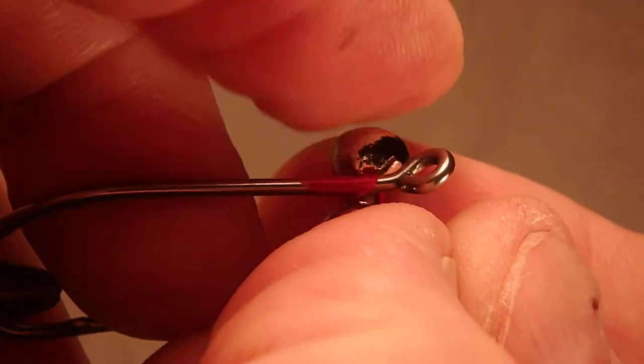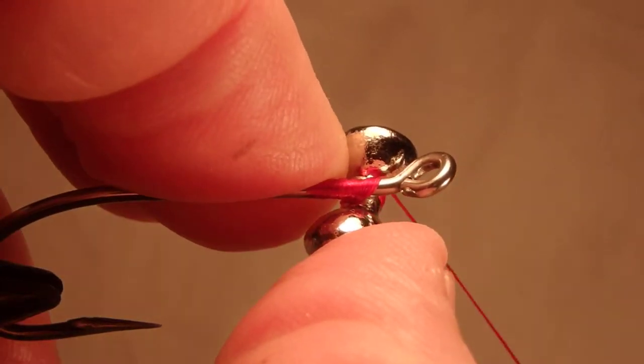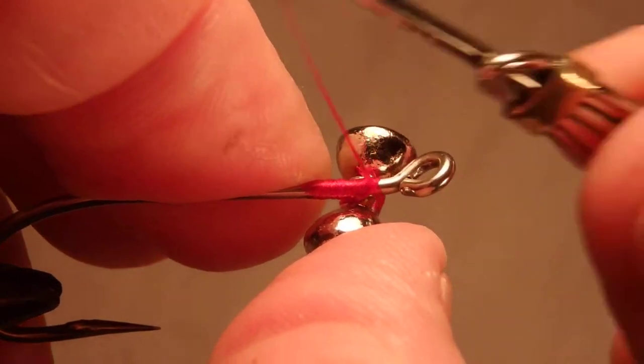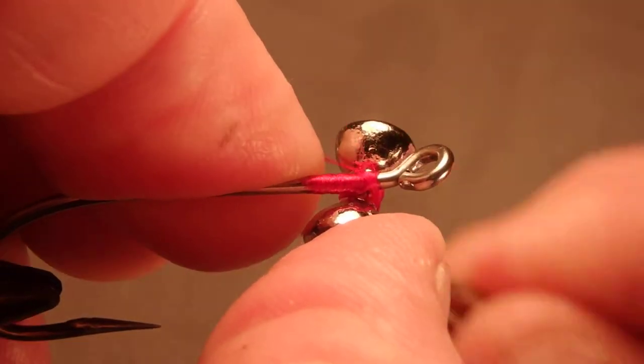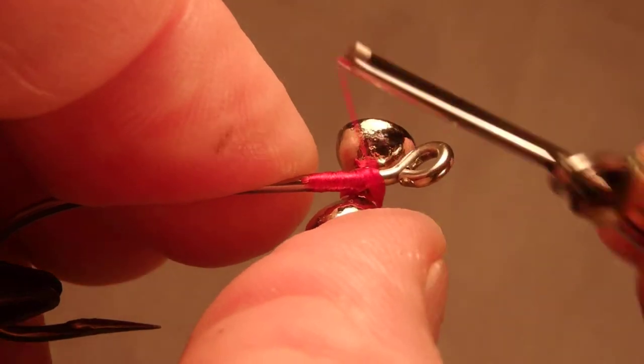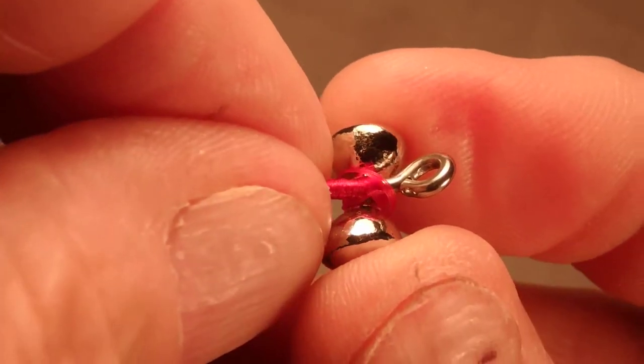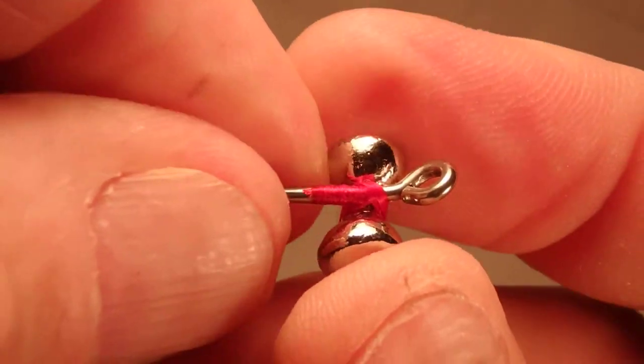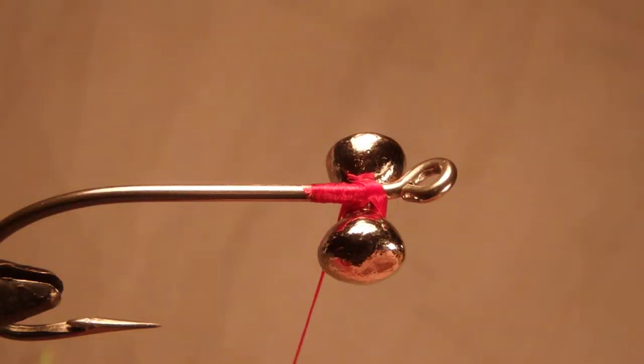Hold it perpendicular again. Go in the same direction and you will have an X cross lashing on the eyes and they will stay in place easily. Just like that.